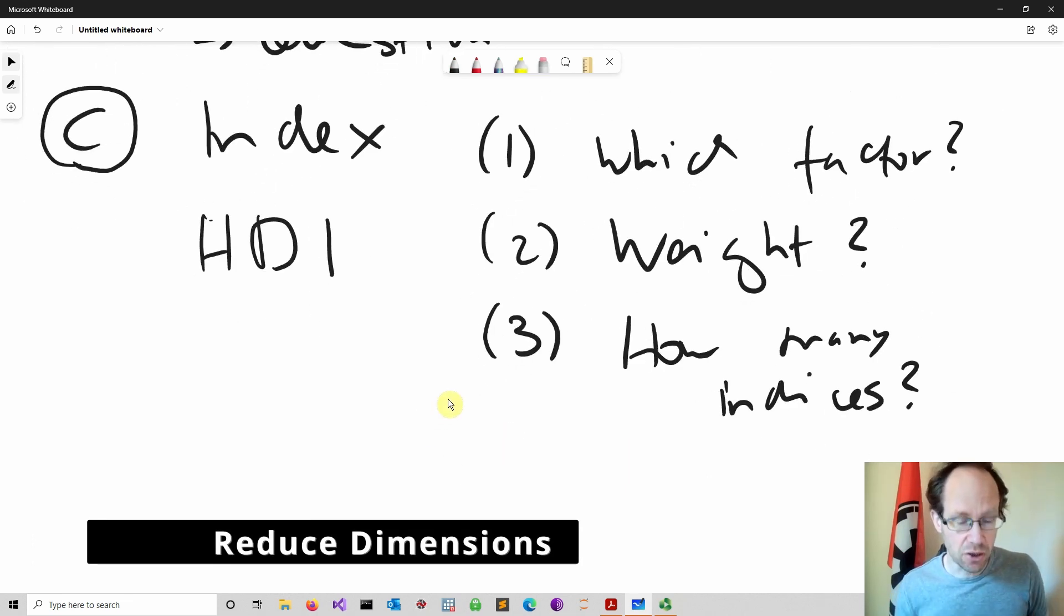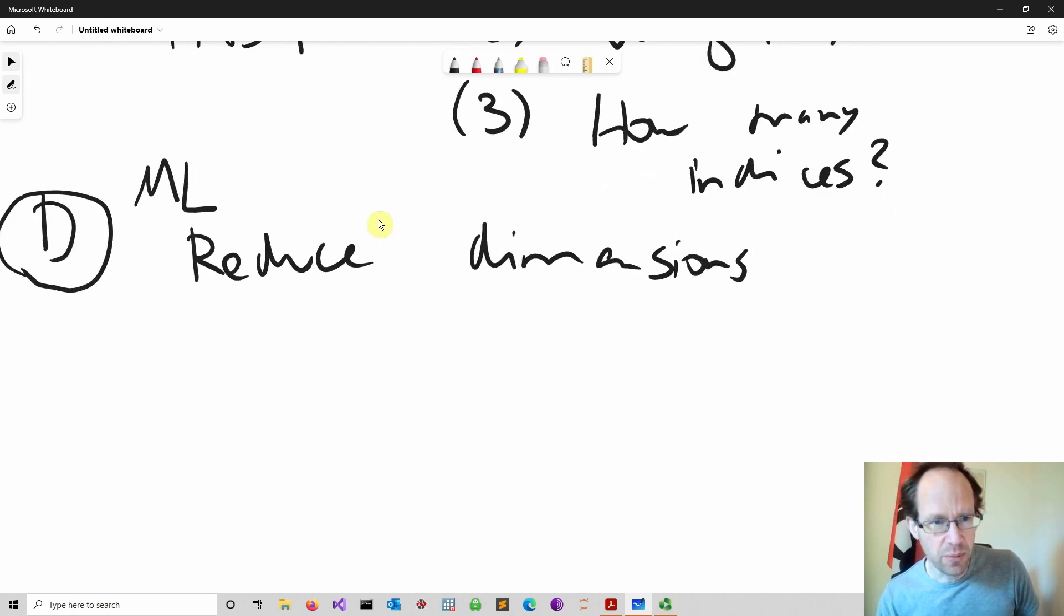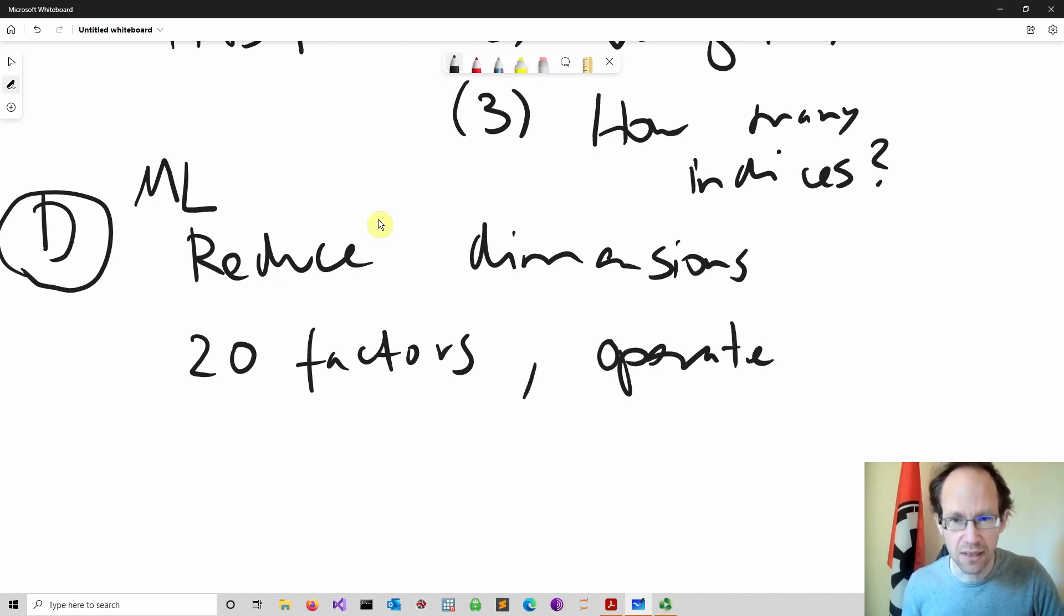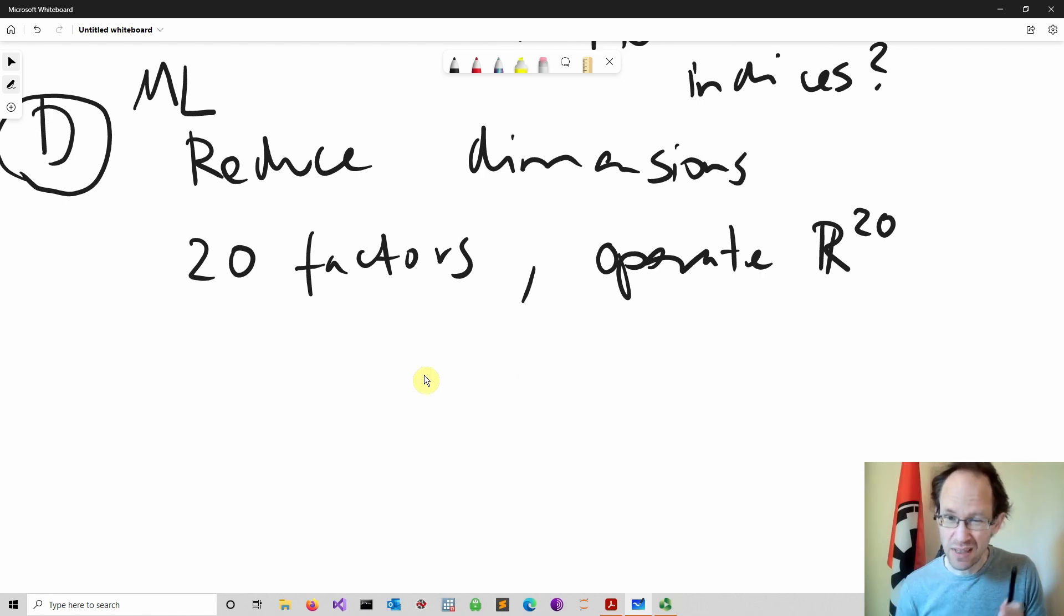This is about what you call reducing dimensions, and this is also an area in machine learning. If I have 20 factors, you actually operate in a space that has 20 dimensions. The idea of an index is you could map this information into a lower dimensional space, but it's very doubtful that one single dimension is sufficient to capture all this information. So how can you move from this to maybe R to the power of k where k is much smaller than 20 without losing too much information?